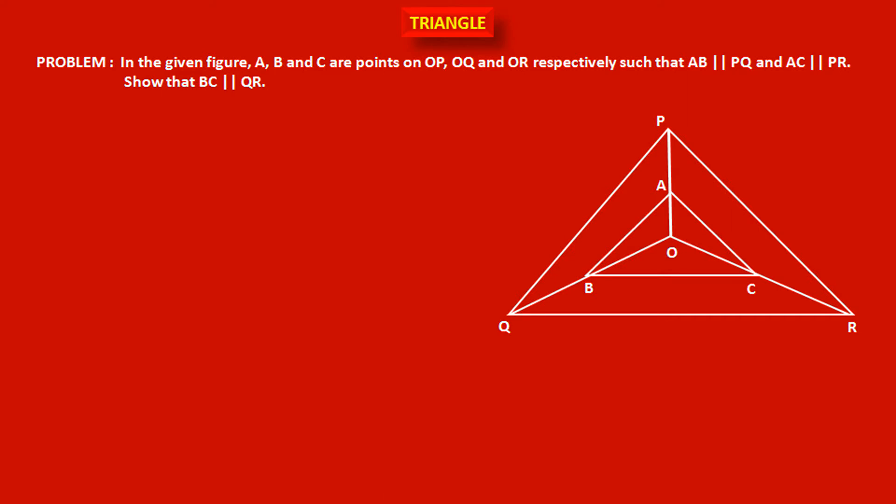Here one figure is given. In this figure, A, B, C are points on OP, OQ, and OR respectively, such that segment AB is parallel to PQ, segment AC is parallel to PR. And we have to show that segment BC is parallel to QR.